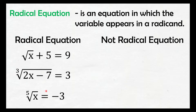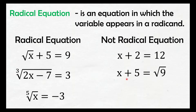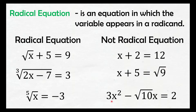Magbigay naman tayo ngayon ng mga example ng not radical equation. Yung x plus 2 equals 12, hindi yan radical equation kasi wala tayong nakikitang radical. Yung x plus 5 equals square root of 9, hindi rin siya radical equation kasi kahit na meron siyang radical, yung radicand niya ay hindi naman variable. And yung 3x squared minus square root of 10, x equals 2 — hindi ito radical equation kasi yung variable x dito ay hindi nakapasok sa radical sign; yung nakapasok lang sa radical sign ay yung 10.